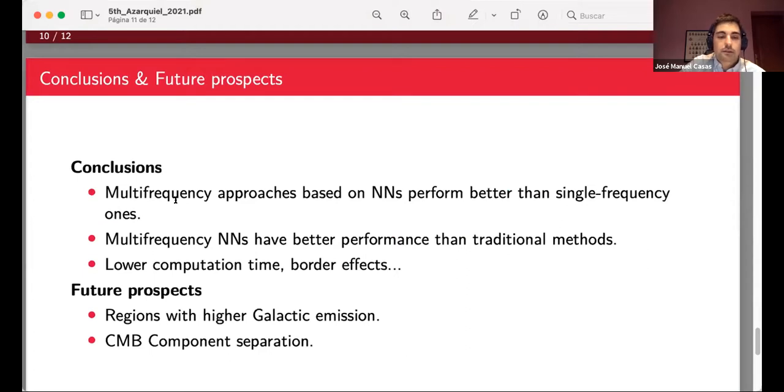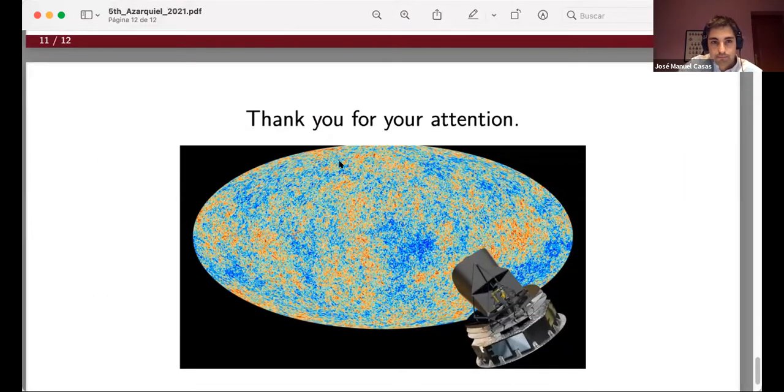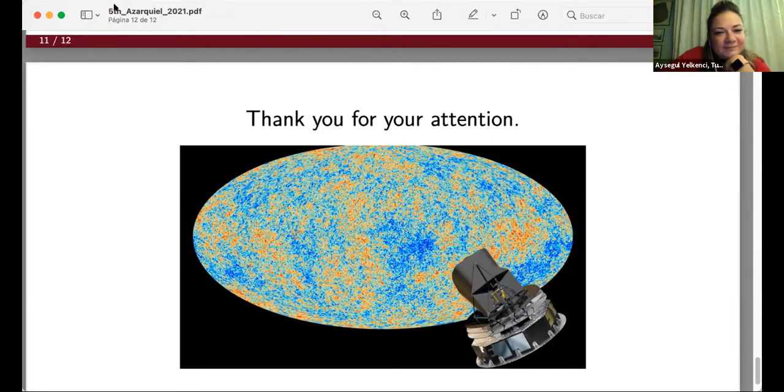And our main conclusions are that neural networks can be the future point source detection methods in the next CMB experiments, and that the multi-frequency approach based neural networks is better than the single-frequency one. But we have another interesting conclusion, such as the lower computation time for neural networks compared to the filters, and that they have no deep border effects. And as a future prospect, we can say that we can study the performance of this neural network in regions with higher galactic emissions, such as the galactic plane, or we can extend this study to do CMB component separation to extract the CMB signal instead of the point source signal. And that was all. Thank you for your attention. Thank you very much for being on time. Looks quite complicated. Do we have any questions for Jose? Okay, thank you Jose. Thank you.